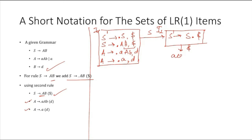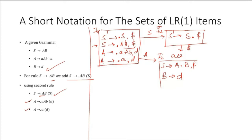For the second rule we generate item set I2. For capital A it gives us A to capital-A dot B, with lookahead D. The lookahead here will be dollar itself, because we are computing it for B — after B there is nothing, so FIRST(dollar) is dollar.